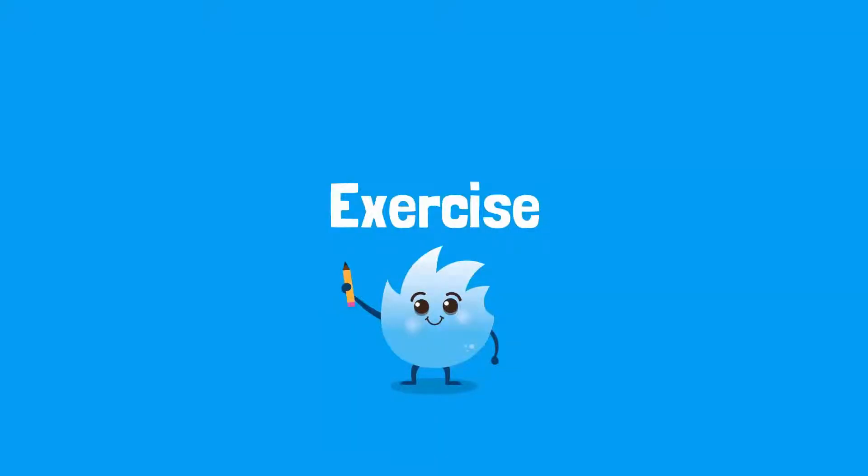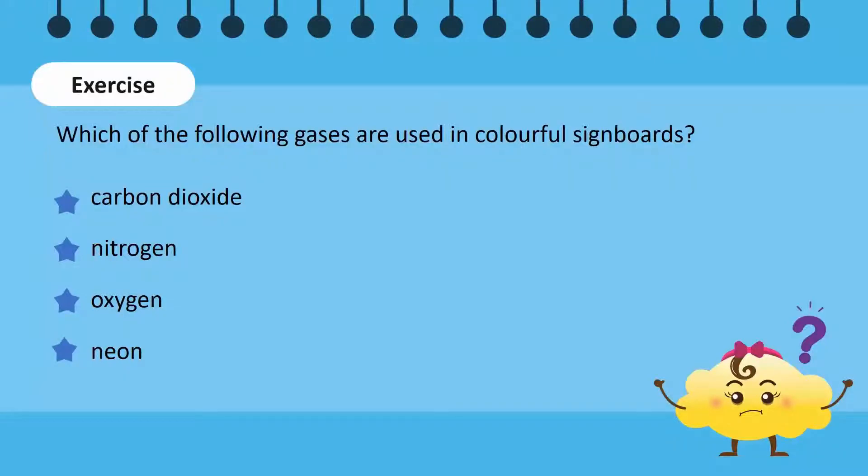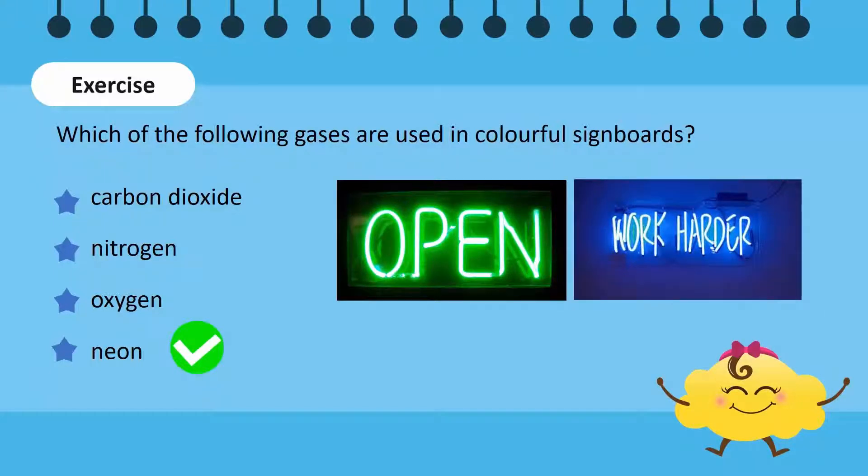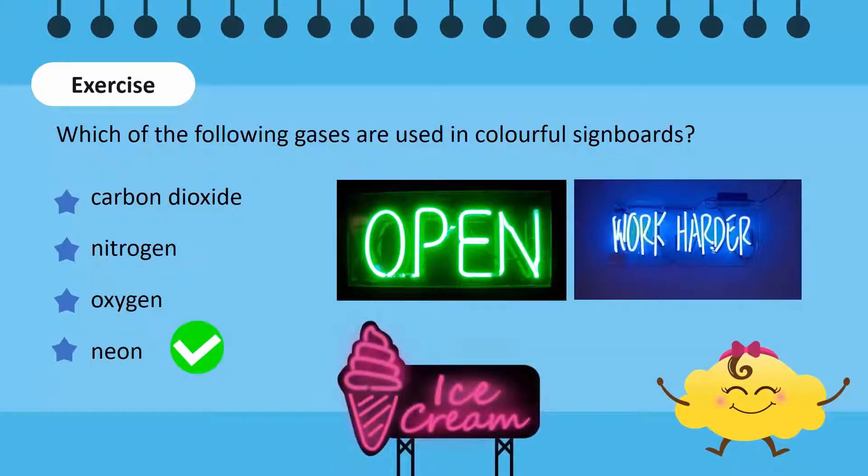Let's test your understanding. Which of the following gases are used in the colorful signboards? Neon glows when electricity is passed through it. Different colored neon lights are made by adding a coating inside the glass tubing.